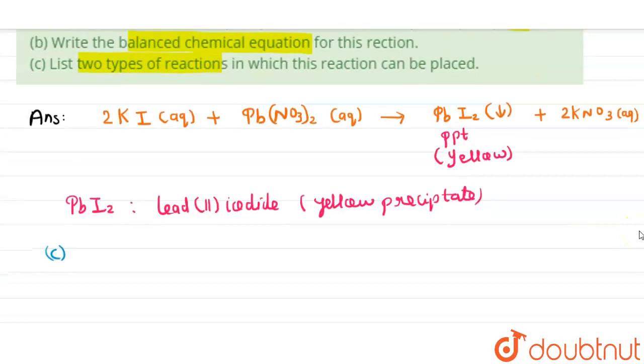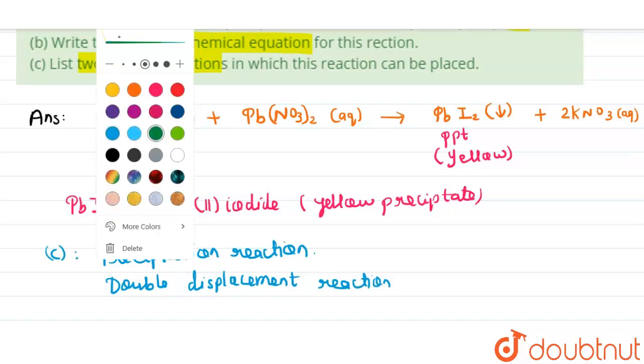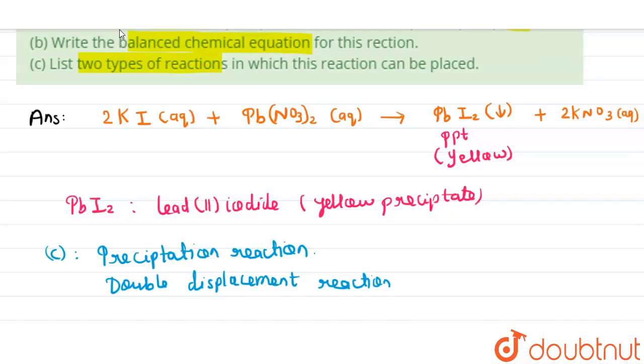So this reaction may be categorized under a precipitation reaction because in this reaction precipitate is formed. And this reaction can also be categorized into double displacement reaction. The reason being that both species are exchanging their parts - for example, potassium is exchanging with nitrate and lead is exchanging with iodine.